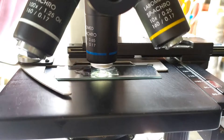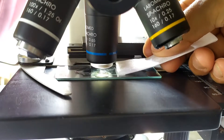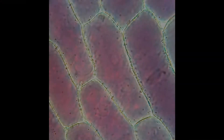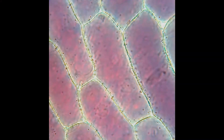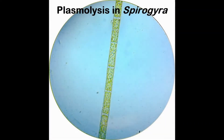Now replace the sucrose solution with distilled water by following the same process of blotting. After a few minutes, you'll find that the plasmolyzed cells regain their turgidity as the shrunken protoplasm of the cells begins to slowly swell up and fill the interior of the cells. This is called deplasmolysis and results from the process of endosmosis of the external fluid into the cells.